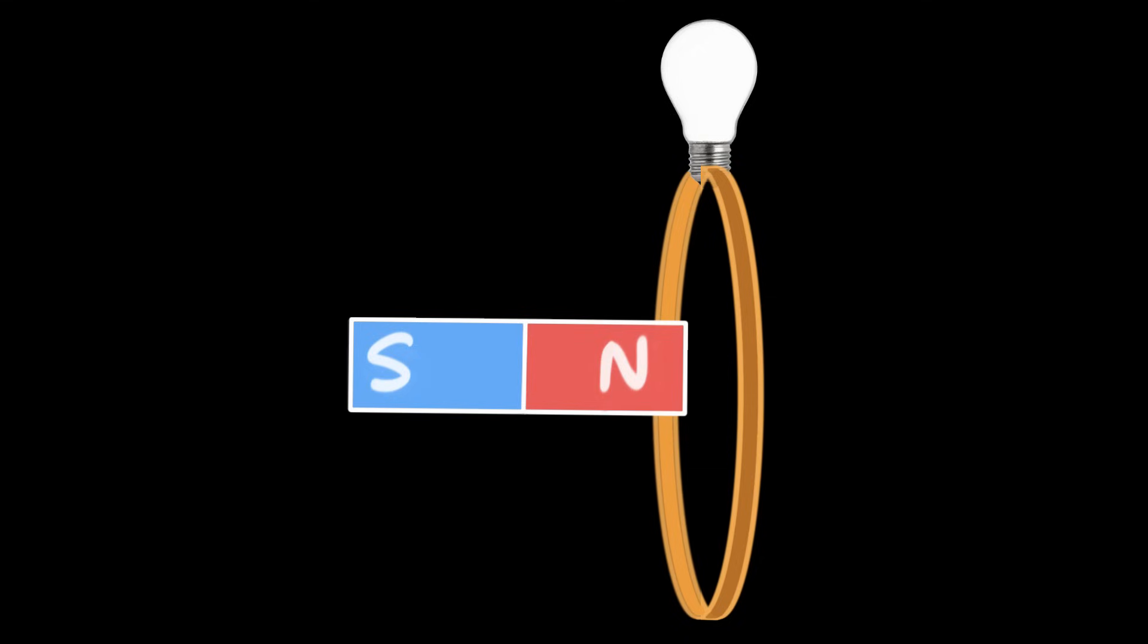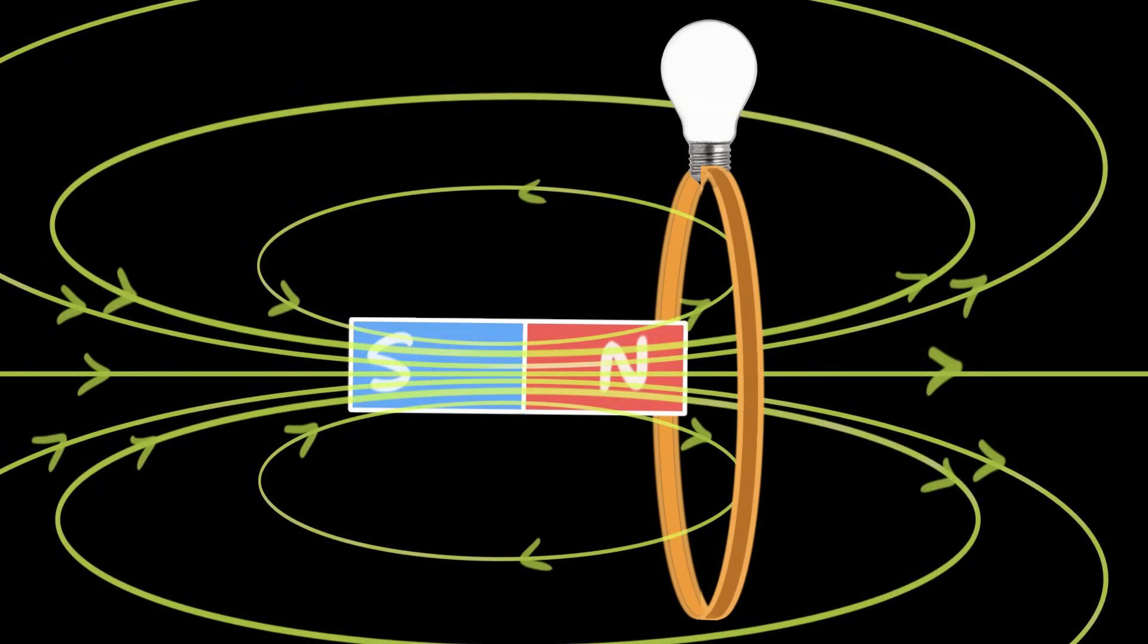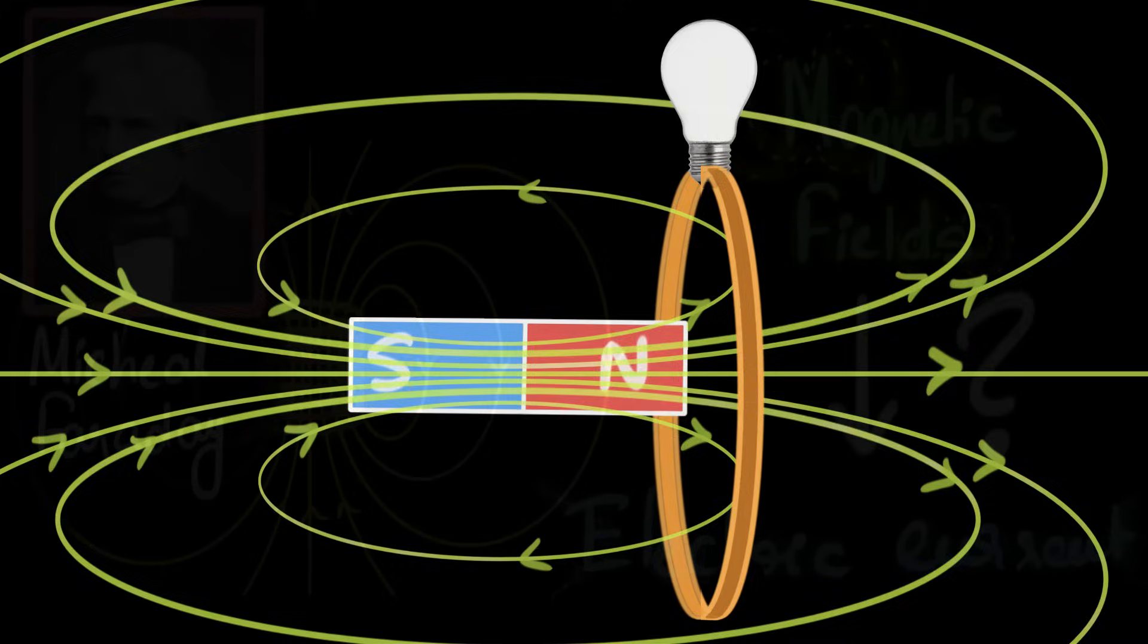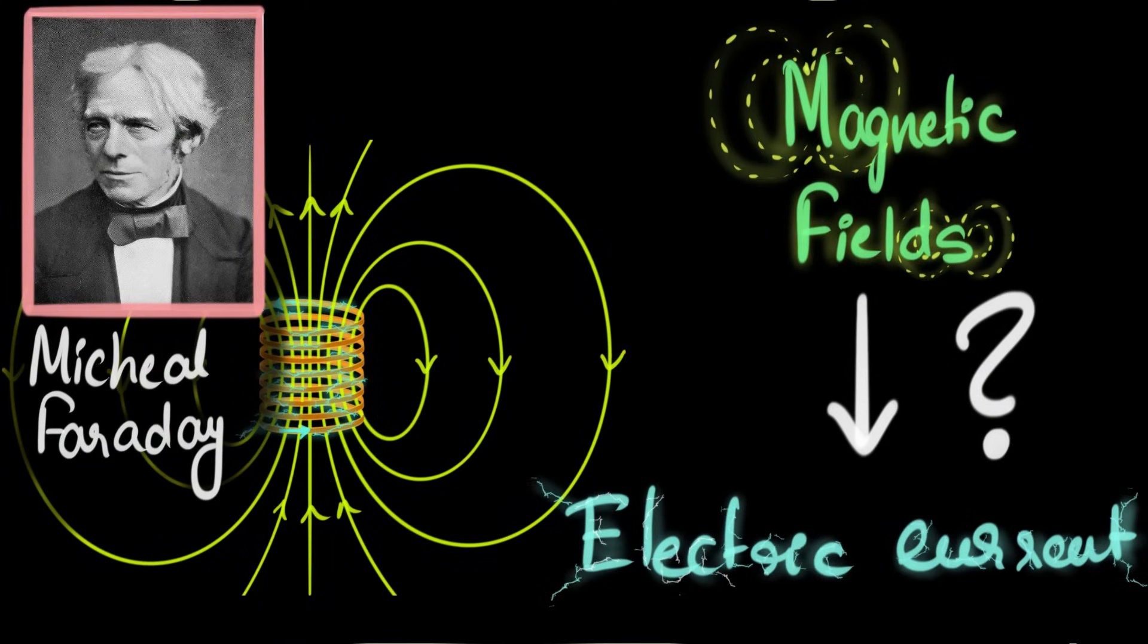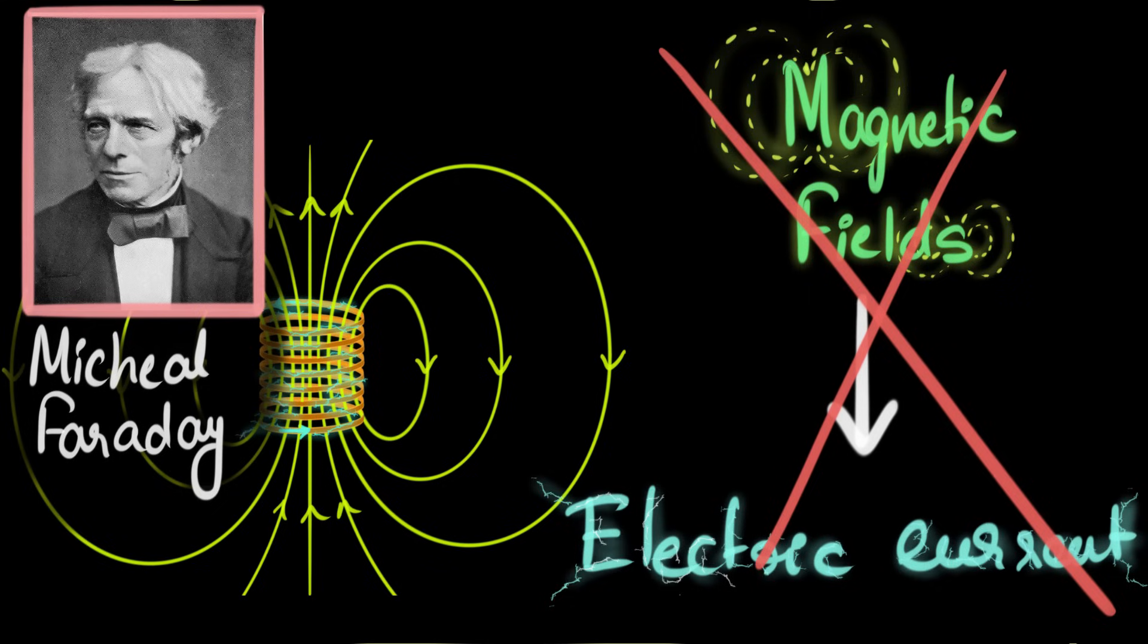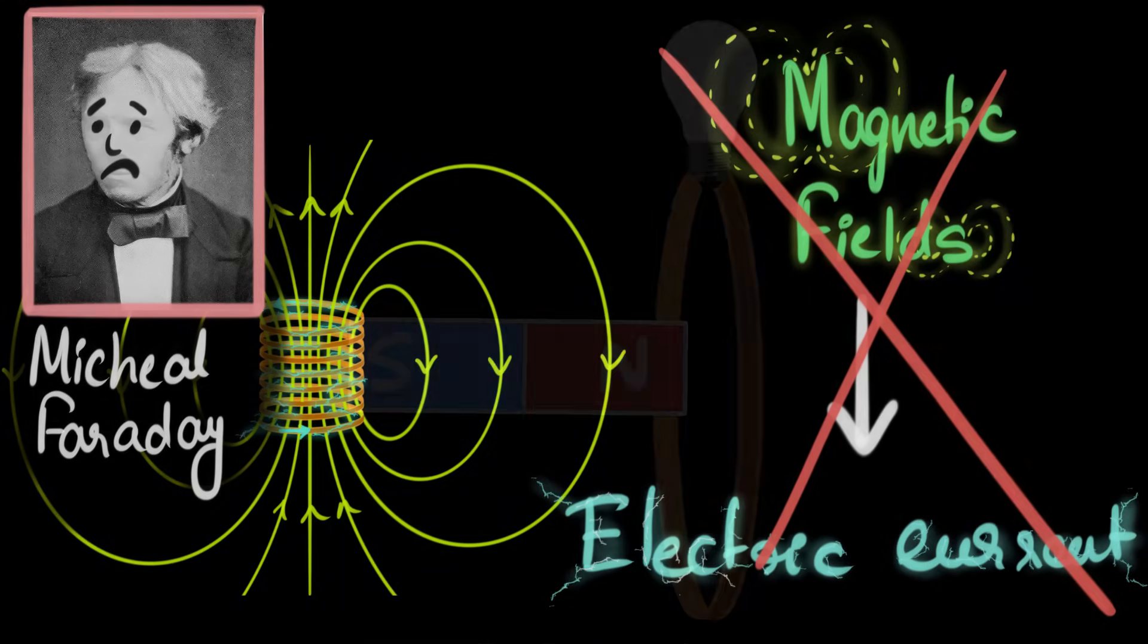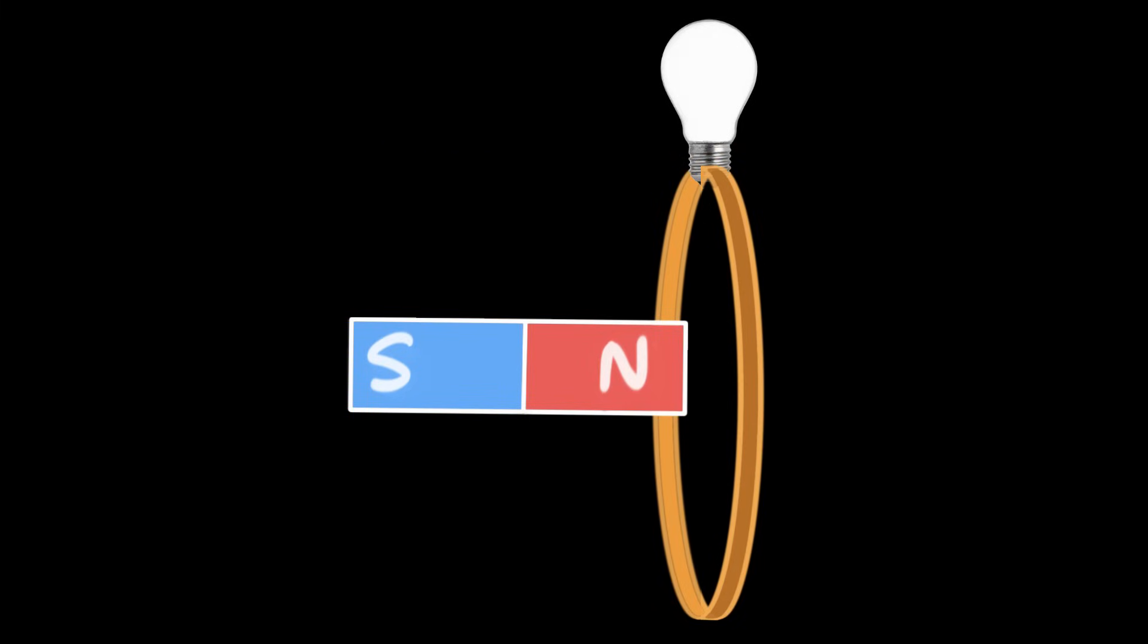And we see nothing. There is no glow in the bulb. That means there is no current. But there is a magnetic field because I've kept a bar magnet close to it. This means a magnetic field does not create an electric current. What a disappointment.